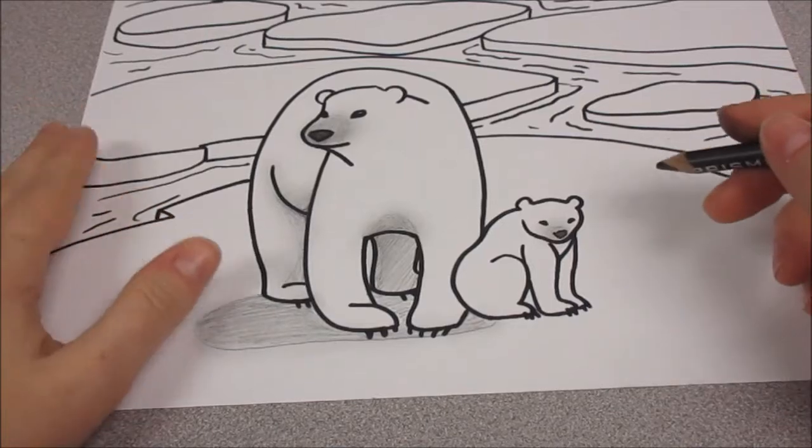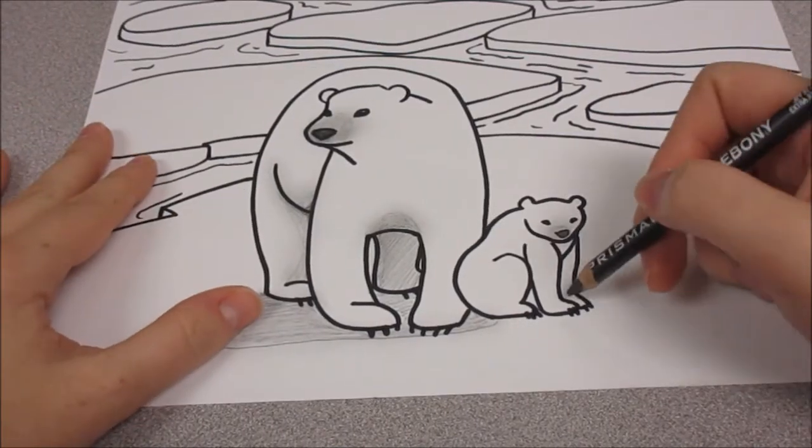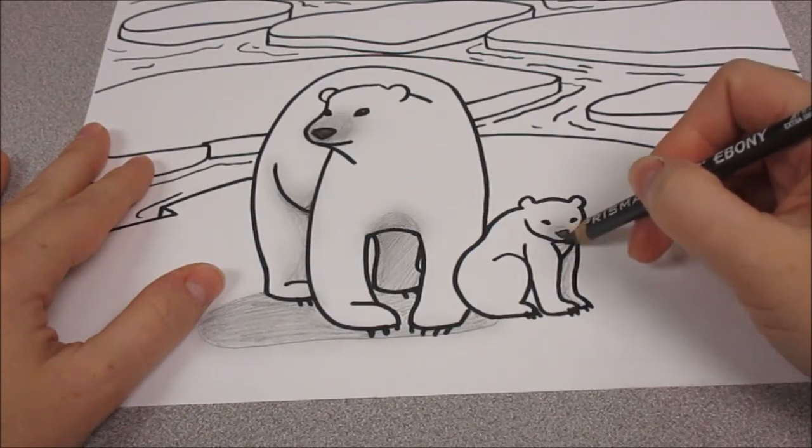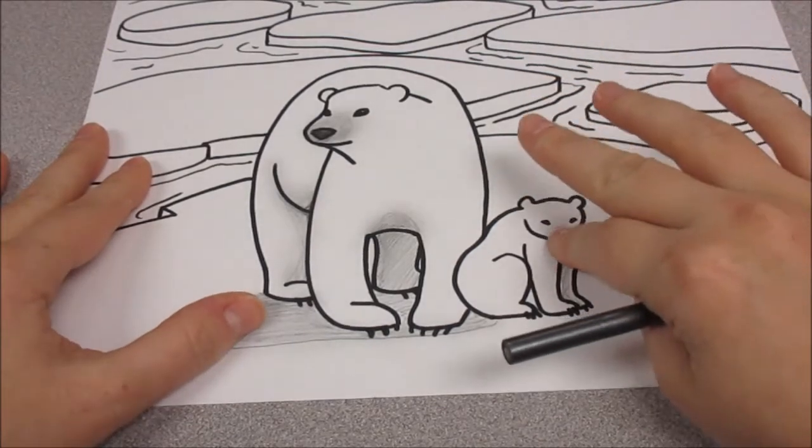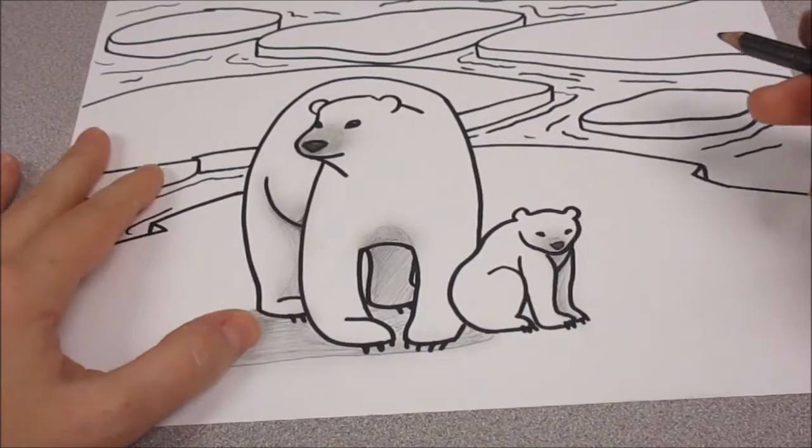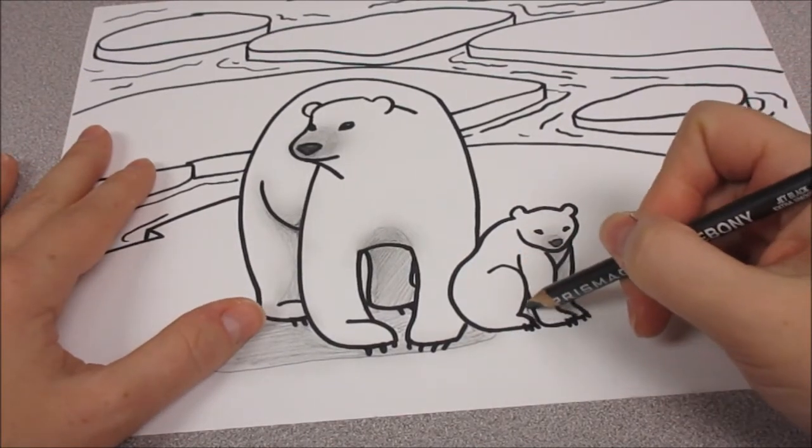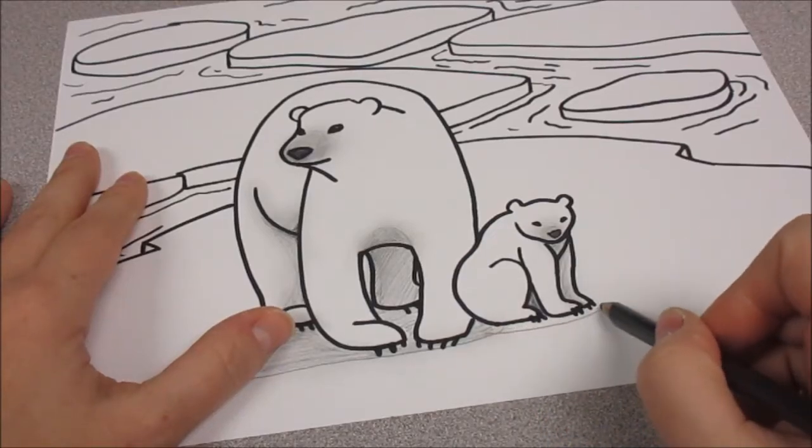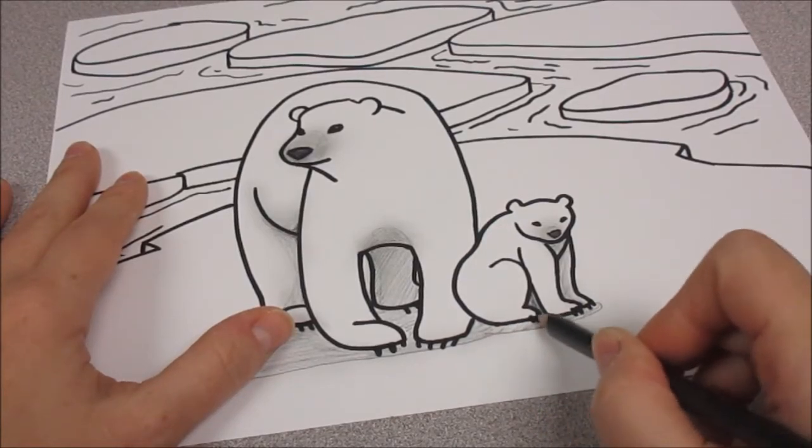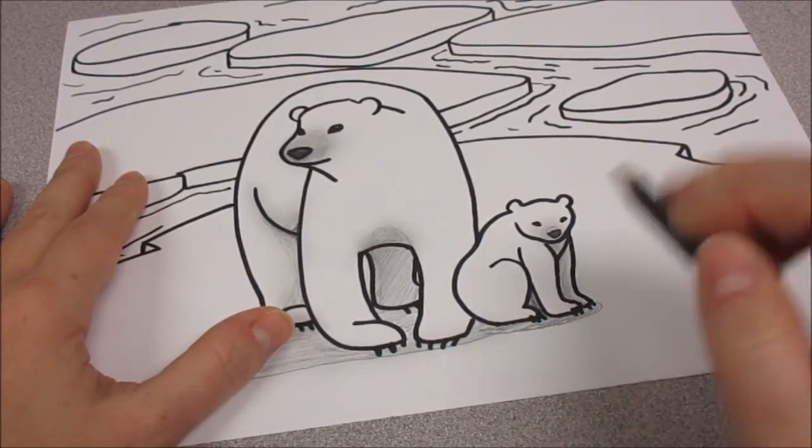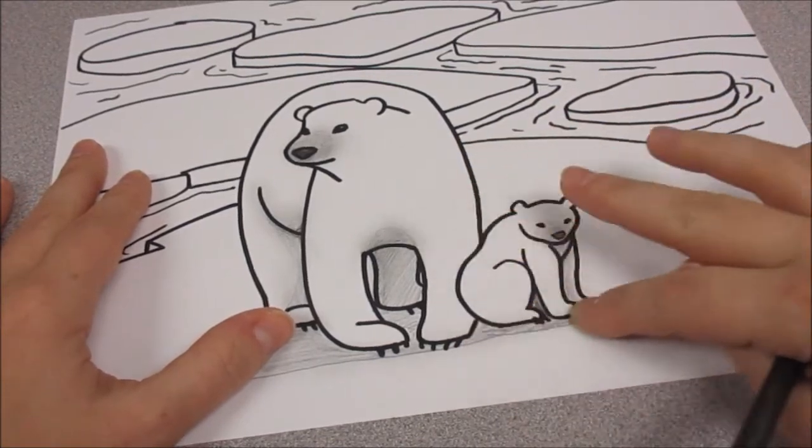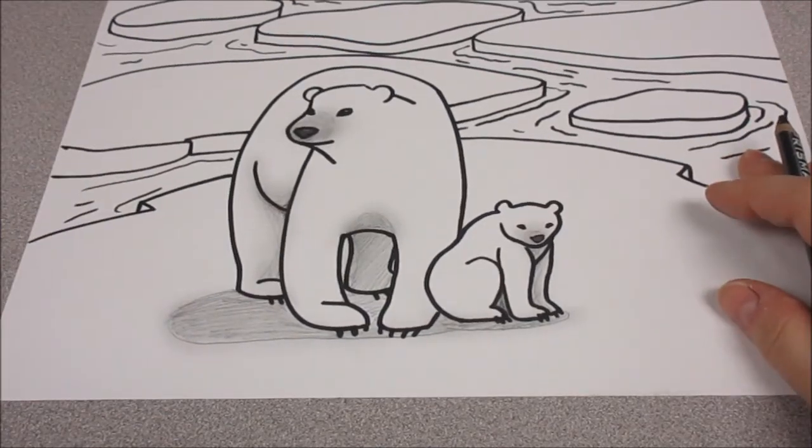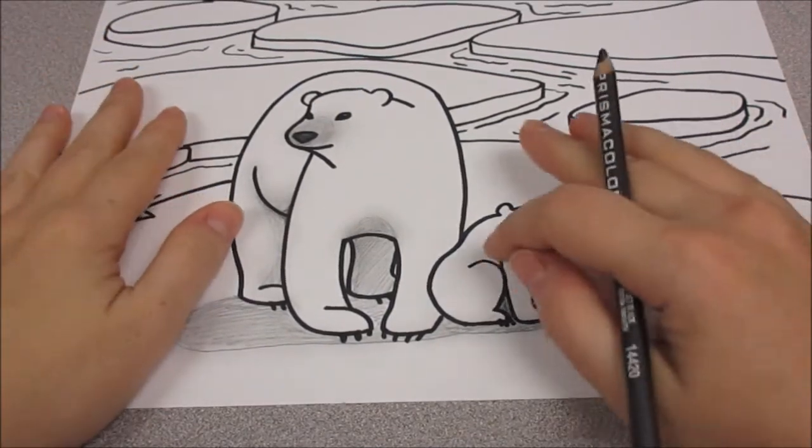Okay, now let's go to Baby Bear. His back leg is going to have a little shadow under his head. Then in between the legs, we'll make another little oval.